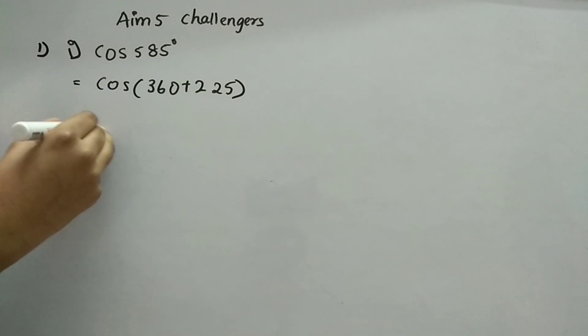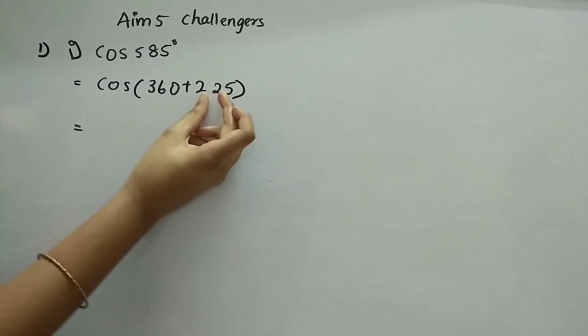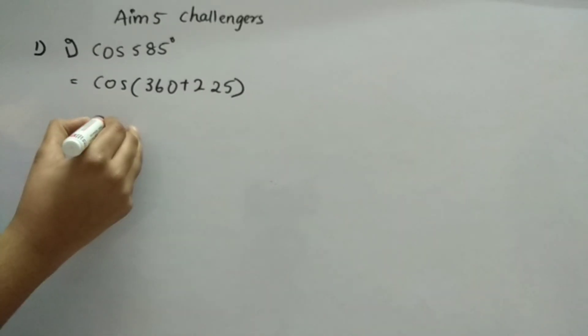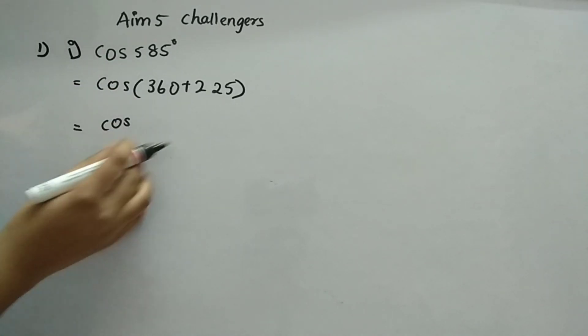Now, you are adding this, right. If you are adding or subtracting, this angle you should take now. 360, no need to consider it. Now, what you will do, write the cos as it is.